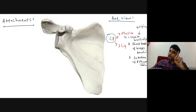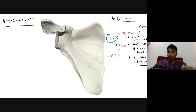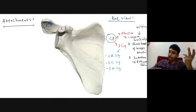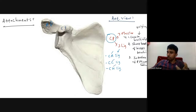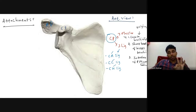Now the three ligaments attached to the coracoid process: first, the coracoacromial ligament, extending between the acromion process and the coracoid process. Second, the coracoclavicular ligament, extending from the coracoid process to the clavicle bone. Third, the coracohumeral ligament, extending from the coracoid process to the upper end of the humerus.